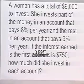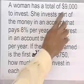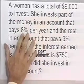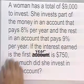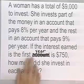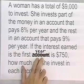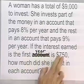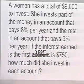Here's our next one. A woman has a total of $9,000 to invest. She invests part of the money in an account that pays 8% per year, and the rest in an account that pays 9% per year. If the interest earned in the first year is $750, how much did she invest in each account?